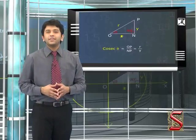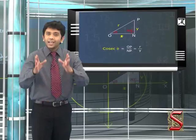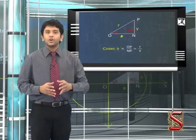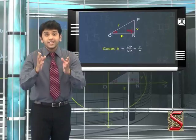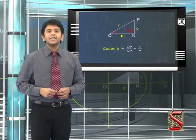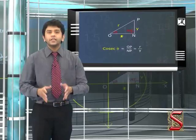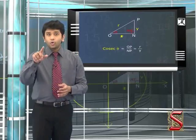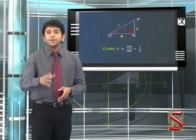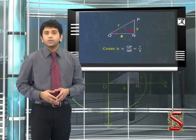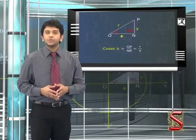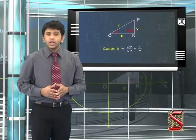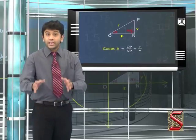All six trigonometric ratios represent the ratios of the sides of a right-angled triangle. They are all real numbers. These ratios are independent of the length of the radius vector OP and depend only on the magnitude or measure of the angle. The six trigonometric ratios are meaningful only when associated with an angle theta.